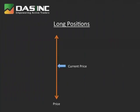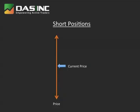On a long position, traders will normally place their sell orders above the current market to exit their position at a higher price. A sell stop order enables you to place a sell order at a price lower than the current market to protect you from further movement against you. Short positions are just the opposite — traders will normally place a buy order below the current market, hopefully to exit their positions at a lower price. A buy stop order will allow you to place a buy order at a price above the current market to protect you from further movement against you.